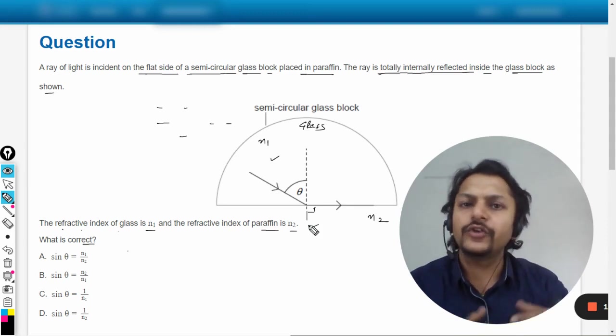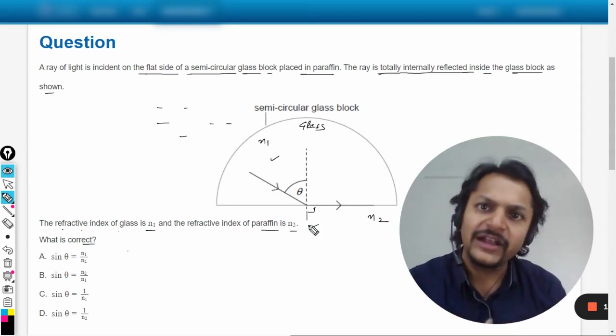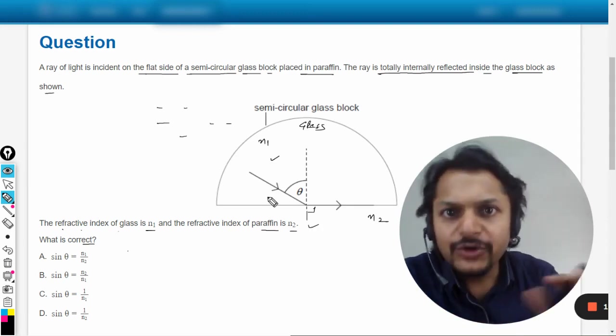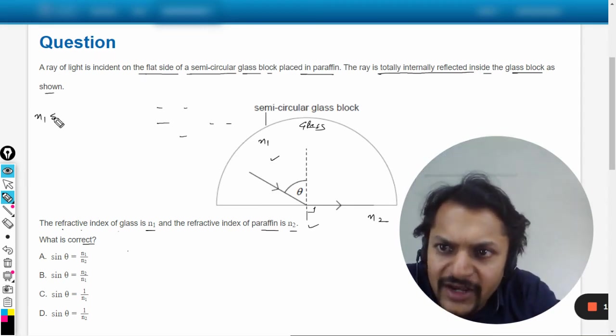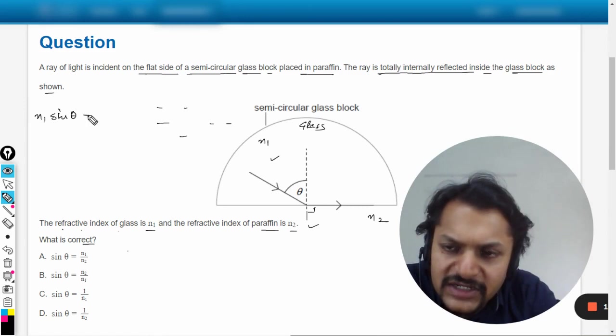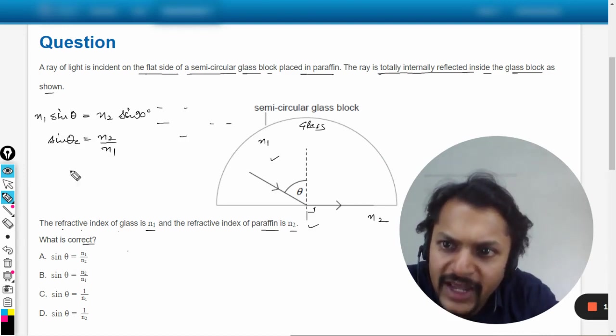Let us first of all go for Snell's law. So n1 sine of theta is equal to n2 sine 90 degrees. And so sine of theta critical is coming out to be n2 by n1. So theta critical is sine inverse...